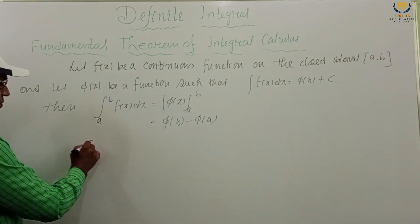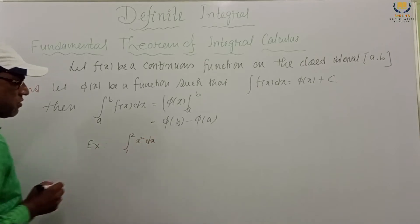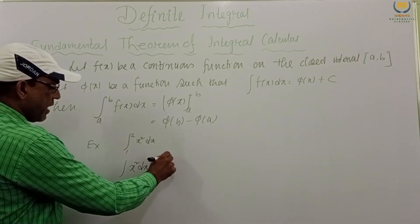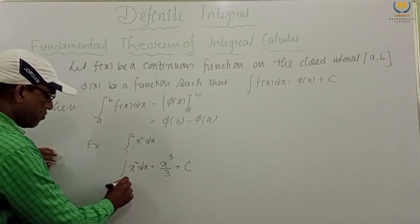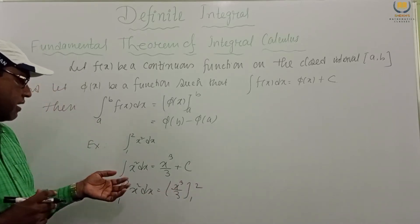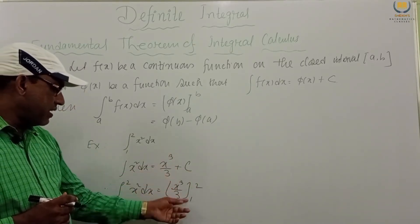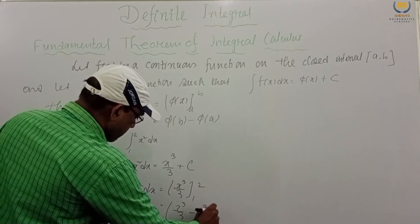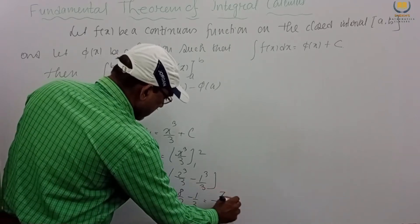Now let's consider a simple example. Suppose we have to find the integral from 1 to 2 of x² dx. First we integrate: integration of x² dx gives x³ by 3 plus c. Taking the limits 1 to 2, this becomes x³ by 3 evaluated from 1 to 2, which is 2³ by 3 minus 1³ by 3, giving 8 by 3 minus 1 by 3. The LCM is 3, so 8 minus 1 equals 7, giving us 7 by 3 as our answer.